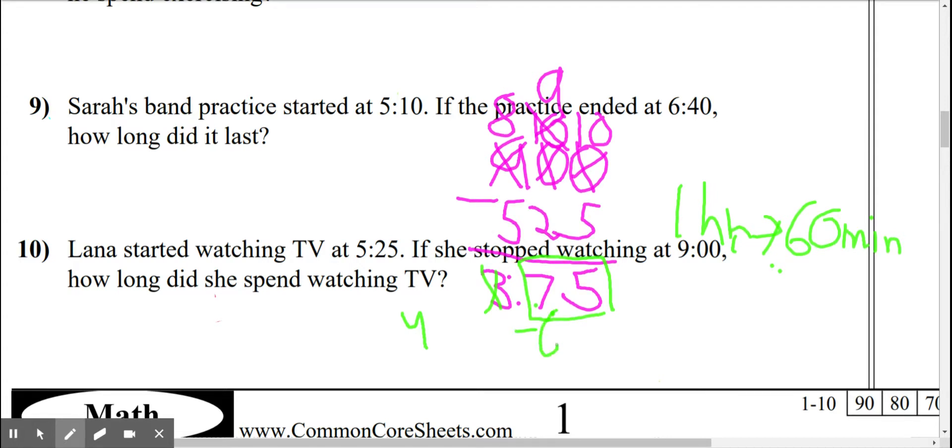And then bump up that 3 to a 4. But we need to know how many minutes are left over here because we can't just leave it like that. So, when we did that, we just basically have to say, well, 75 minus 60. 5 minus 0 is 5. 7 minus 6 is 1. We have now 4 hours and 15 minutes.